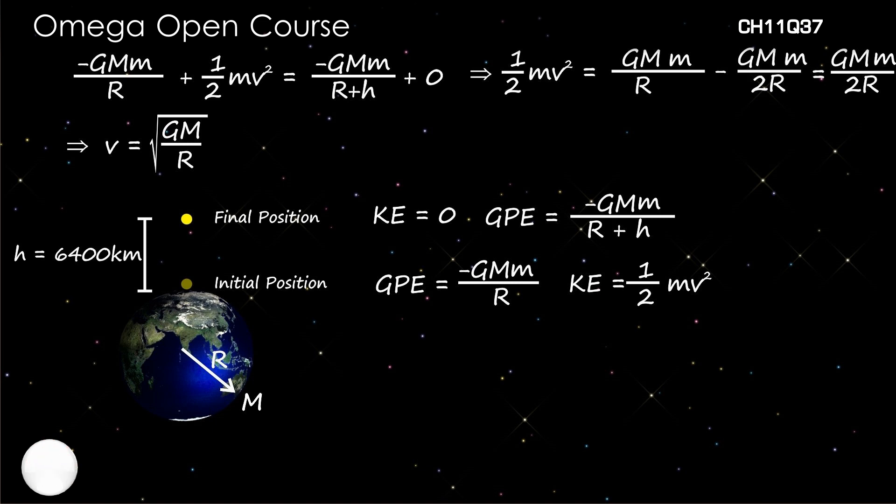As you might recall, √(2GM/R) is the escape velocity from the surface of the earth, which is 11.2 kilometers per second. So, v equals ve/√2 or 11.2/√2 kilometer per second.